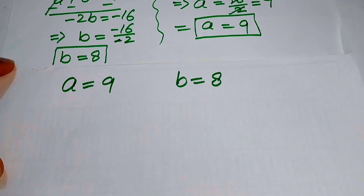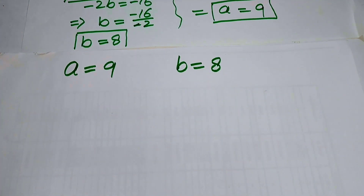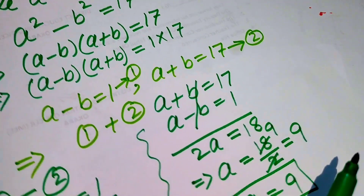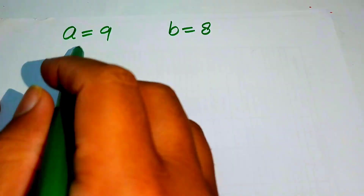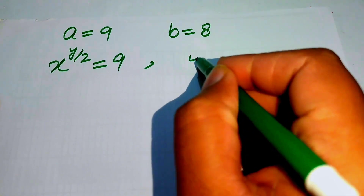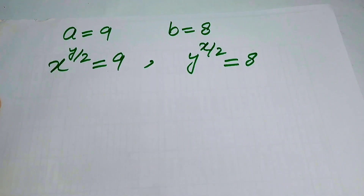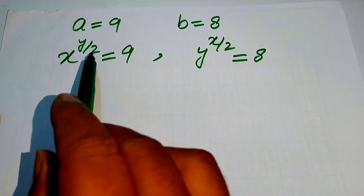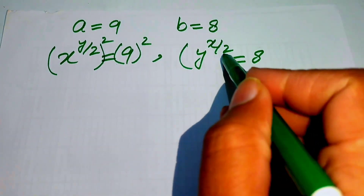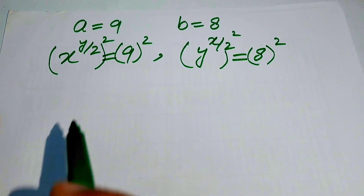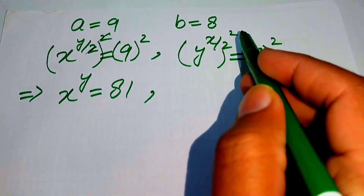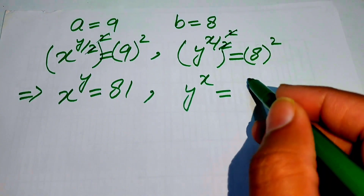We back substitute the values of a and b. Since a equals x to the power of y over 2, we have x to the power of y over 2 equals 9. Since b equals y to the power of x over 2, we have y to the power of x over 2 equals 8. Squaring both sides of each equation removes the one-half exponents, giving x to the power of y equals 81 and y to the power of x equals 64.